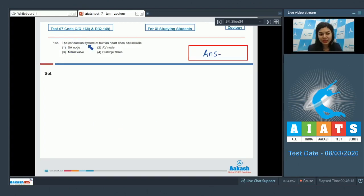Question 168: The conduction system of the human heart does not include SA node, AV node, mitral valve, or Purkinje fibers.